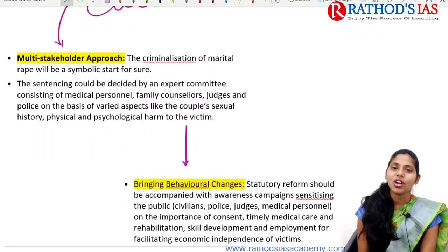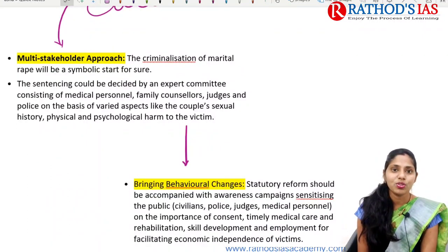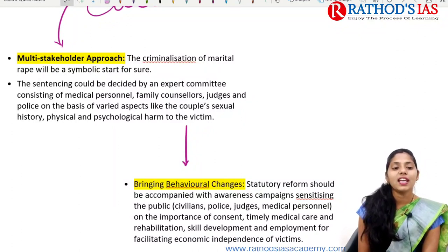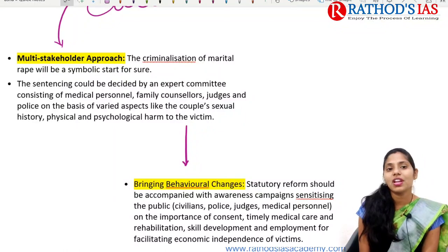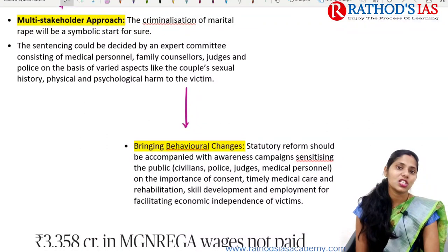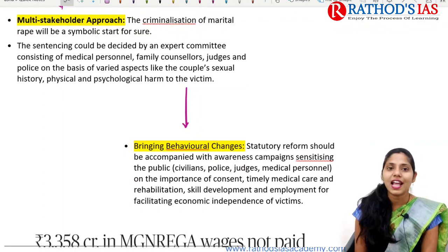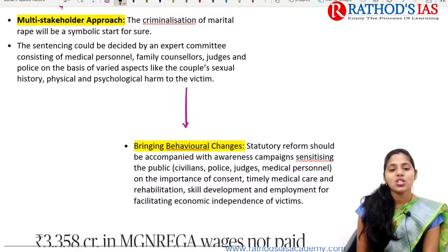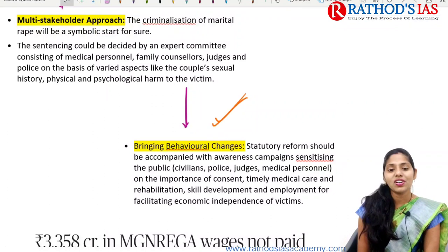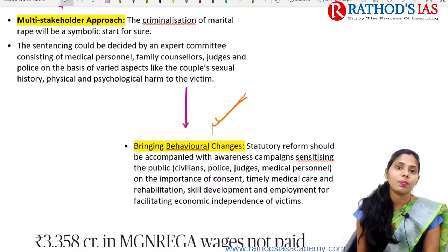Issues with marital rape include: the exception clause violates women's fundamental right to equality and freedom of speech and expression, and denies women agency over their own bodies. There is also a dismal state of the judicial system, with low reporting of crimes, inaccurate NCRB data collection methods, and lengthy court processes. The Justice J.S. Verma Committee recommendations, constituted after the horrific Nirbhaya gang rape in 2012, came up with the Criminal Law Amendment Act 2013. The way forward includes a multi-stakeholder approach involving medical personnel, family counselors, judges, and police, and bringing behavioral changes through the ABC (Affective, Behavioral, Cognitive) model.